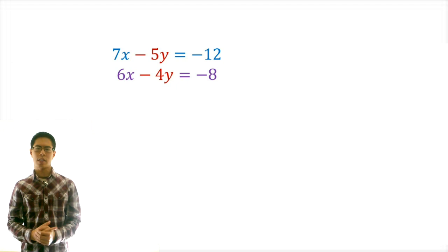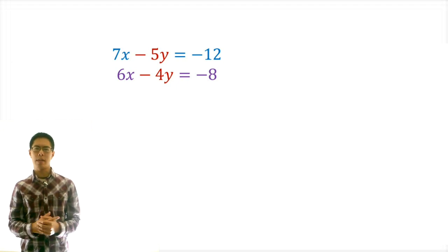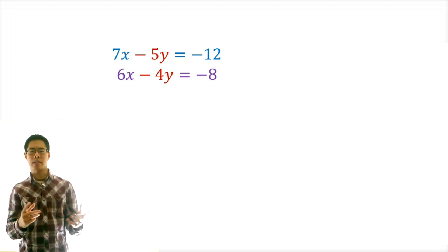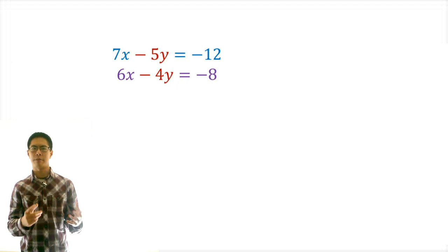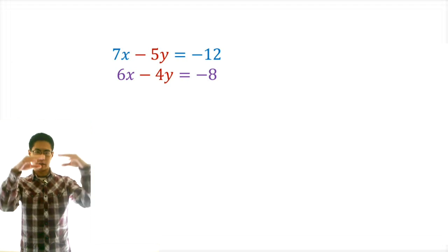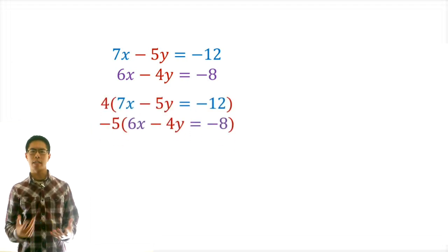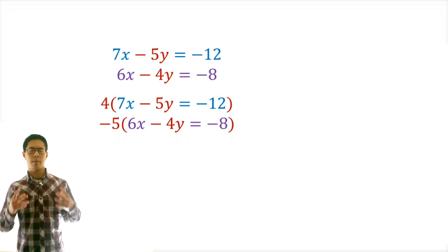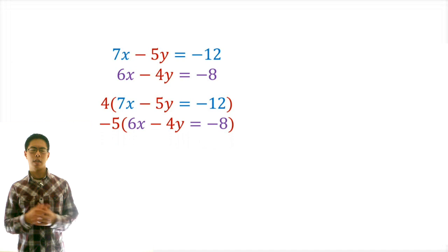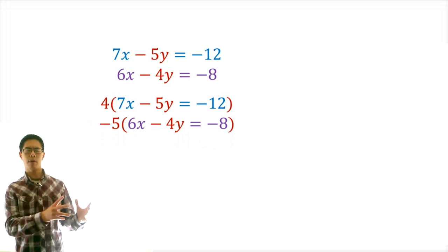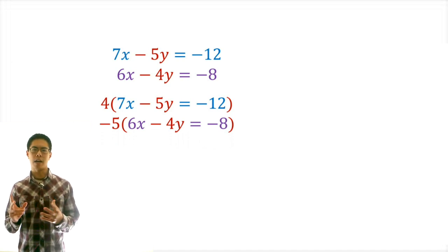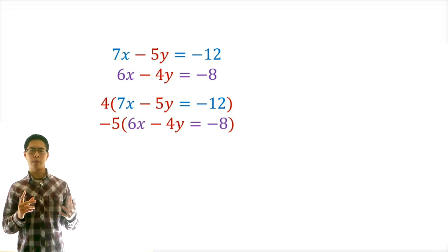Step 1, we decide which variable will be easier to eliminate. Here, y will be easier to eliminate since the least common factor of 4 and 5 is 20, and the least common factor of 6 and 7 is 42, which is a lot bigger. Step 2, we multiply one or both equations by a constant that results in the variable we chose being the same value but opposite signs. To do this, let's multiply the first equation by 4 and the second equation by negative 5. Remember, when we do this, we need to multiply every part of the equation by this number.